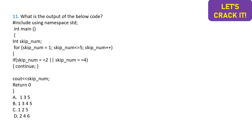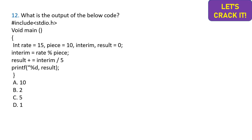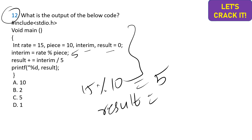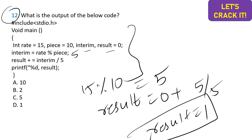The twelfth question: integer rate = 15, p = 10, result = 0. interim = rate % p, which is 15 % 10 = 5. Then result = result + interim / 5, which is 0 + 5/5 = 0 + 1 = 1. Finally, 1 is printed. Option D is the correct answer.